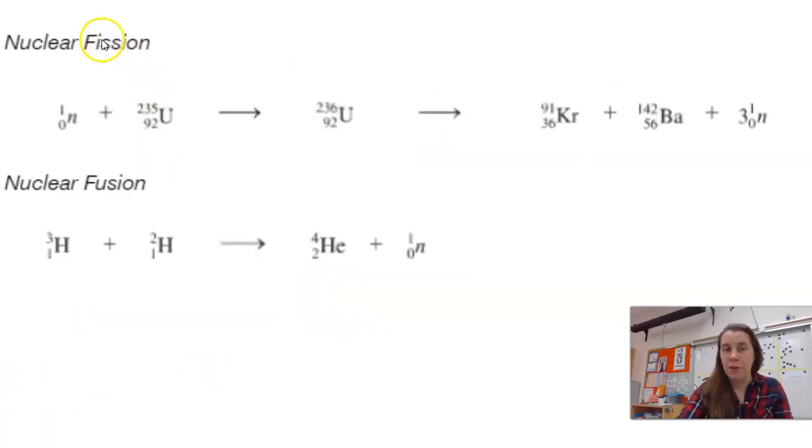The other two we're going to talk about are nuclear fission and nuclear fusion. In nuclear fission, we have a large unstable atom, and then we add to it one neutron, which causes it to break apart. When we add that one neutron, we're basically just adding one to the mass. This step we don't usually show.